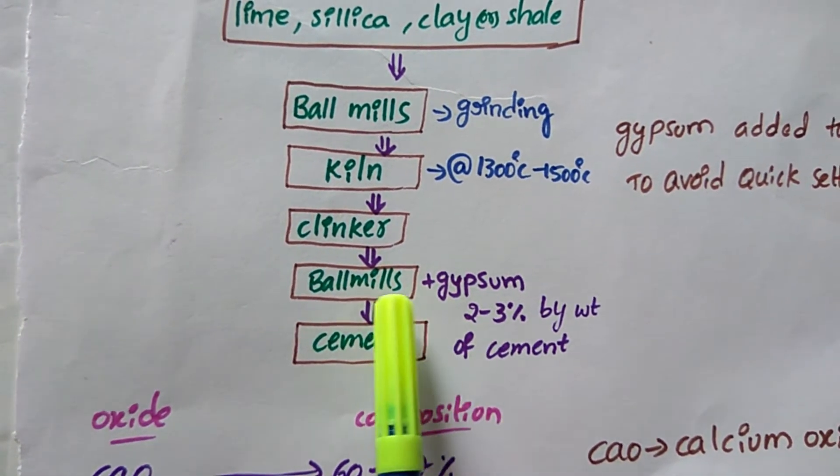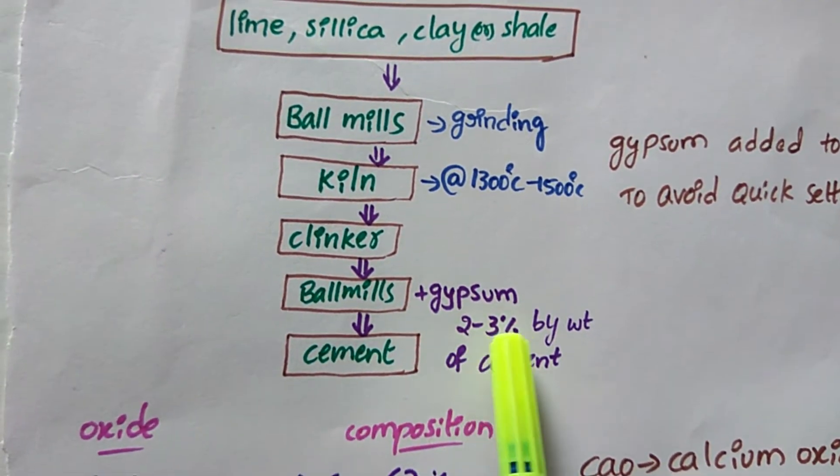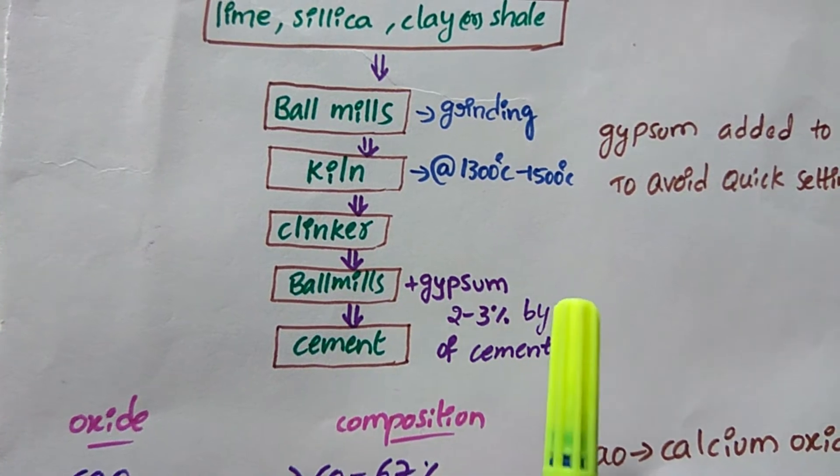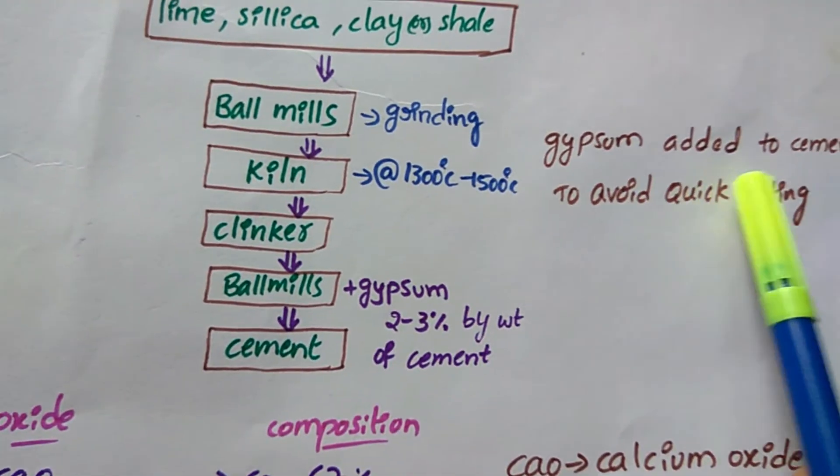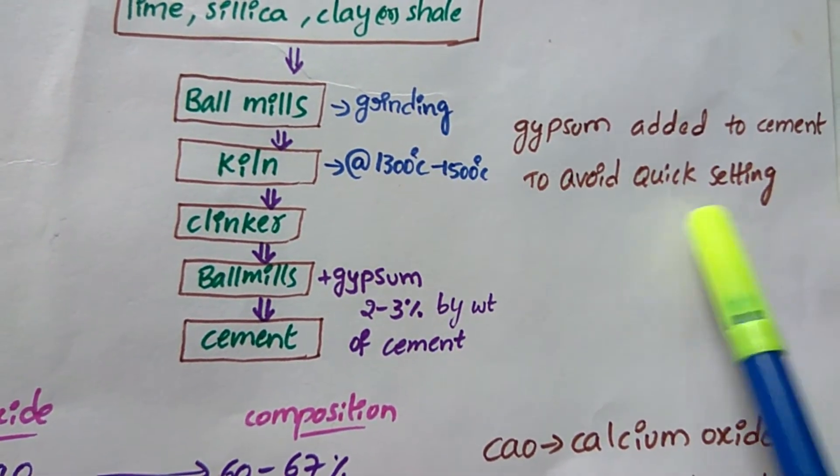these ball mills, we add gypsum—two to three percentage by weight of cement. Gypsum is added to cement to avoid quick setting.